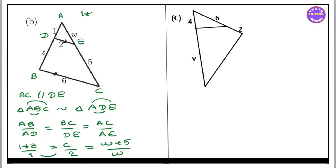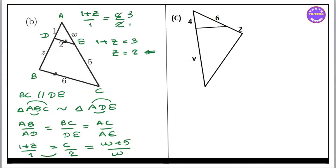So 1 plus z by 1 equal to 6 by 2. So 1 plus 3 is 2 — that is, 1 plus z equal to 3, so 1 plus z equal to 2. So 1 plus z equals 3.